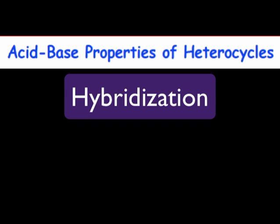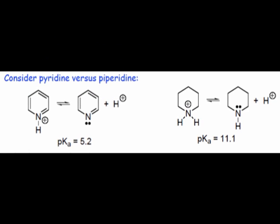Let's begin with hybridization. Here you see pyridine and its fully saturated relative, piperidine. Acid-base equilibria for both compounds are shown. We can see from the pKa's given underneath each equilibrium that pyridine is significantly more acidic than piperidine.